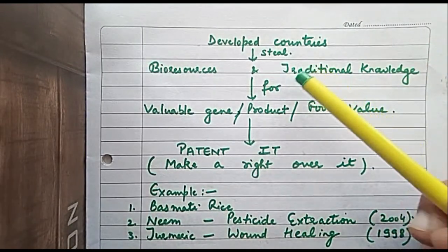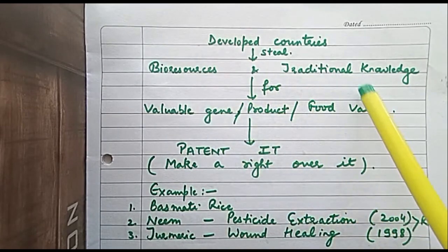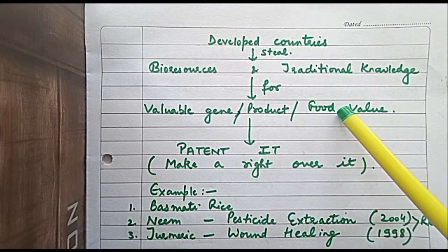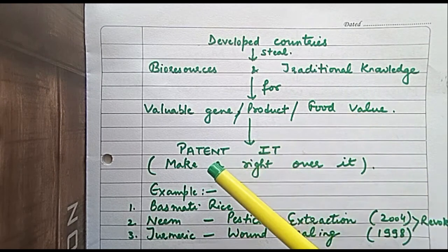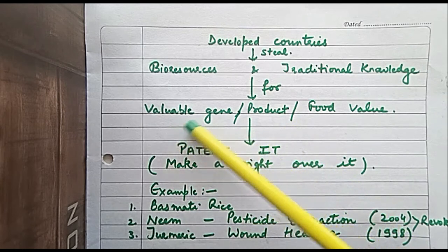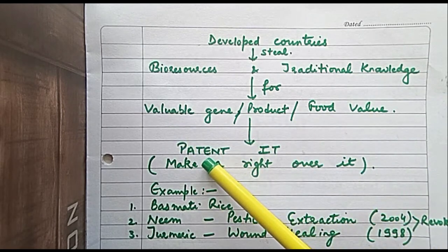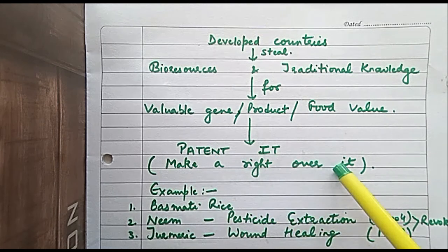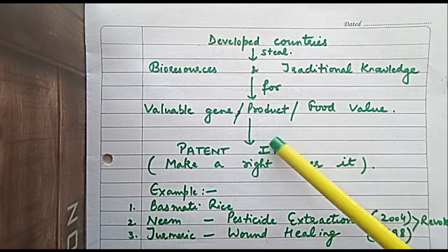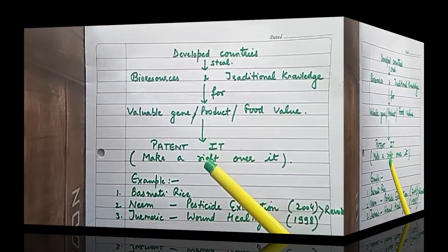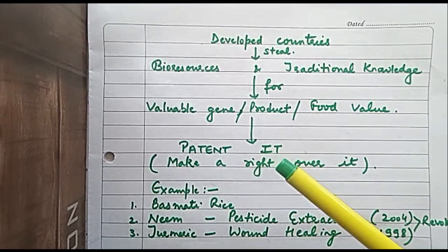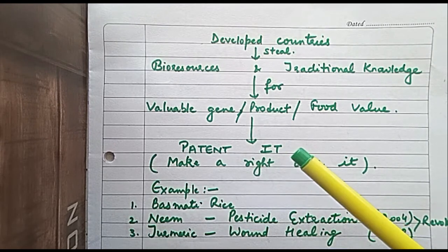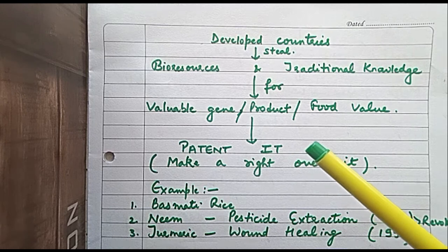Developed countries are essentially stealing the bioresources and traditional knowledge of developing countries — whether for some valuable gene, product, or food value — and using it freely without compensation. Things that were free of cost and under the traditional knowledge of local communities can then be patented.